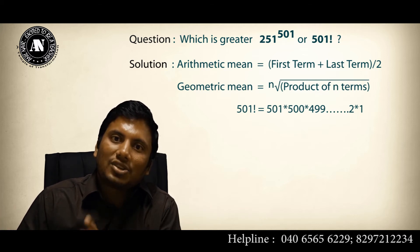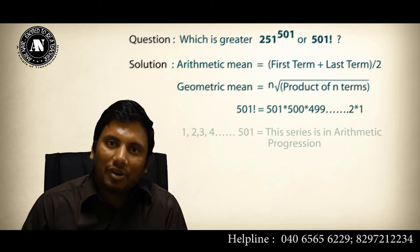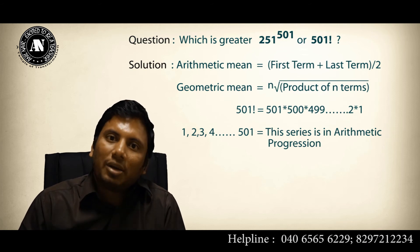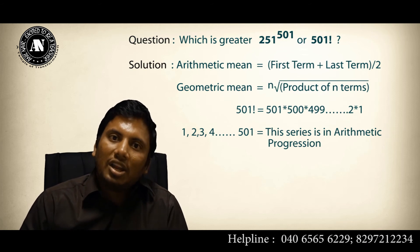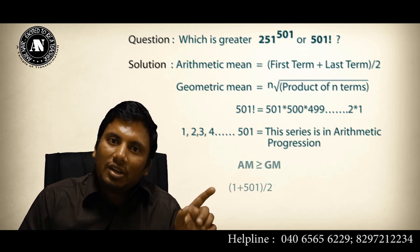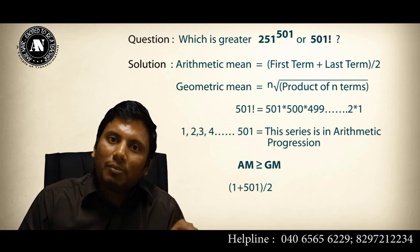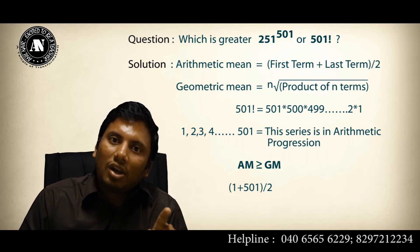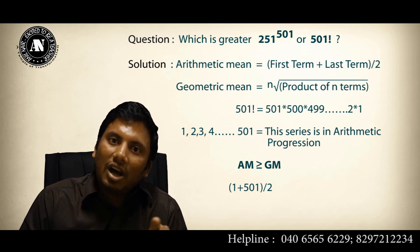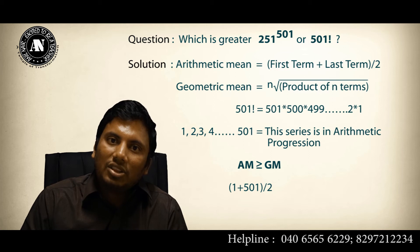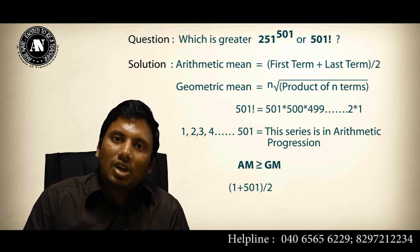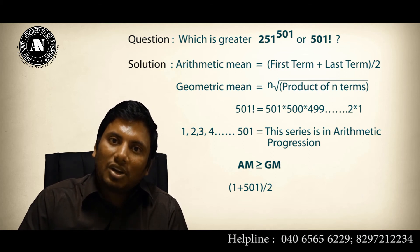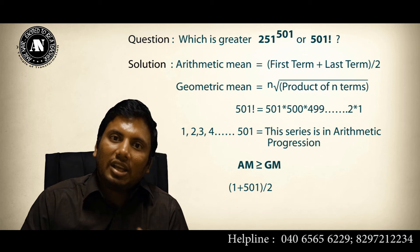The series 1, 2, 3, ... up to 501 is in arithmetic progression. So I take the arithmetic mean: (1 + 501) / 2. The arithmetic mean is always greater than or equal to the geometric mean, and in this case strictly greater, because the numbers are not all equal.